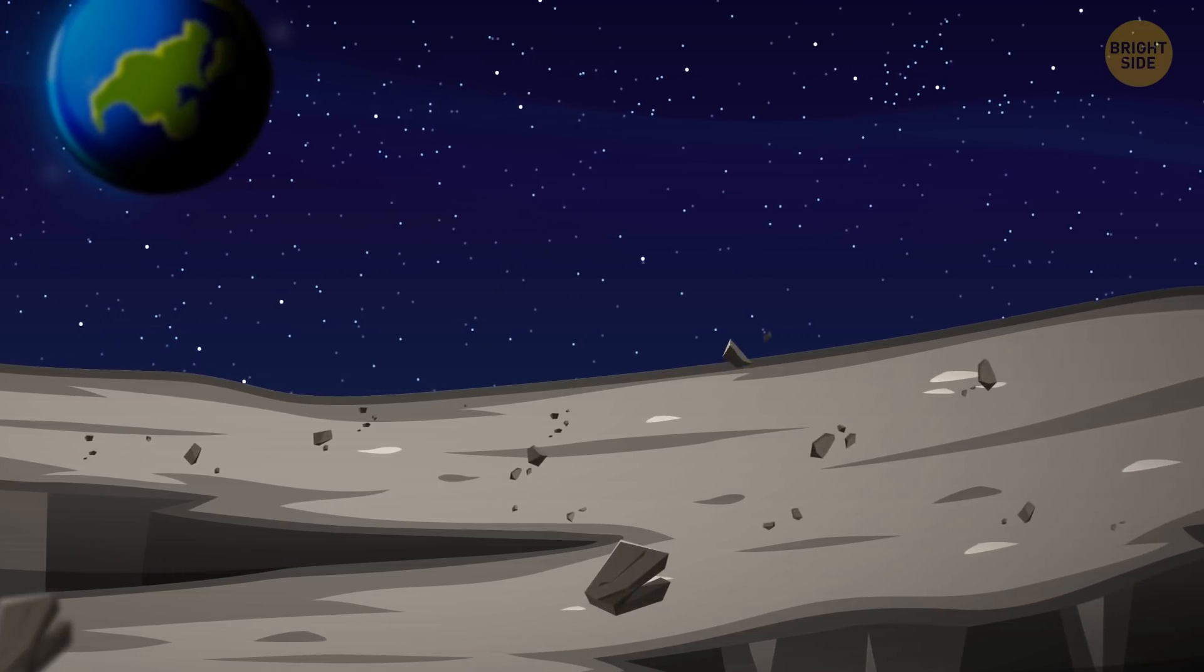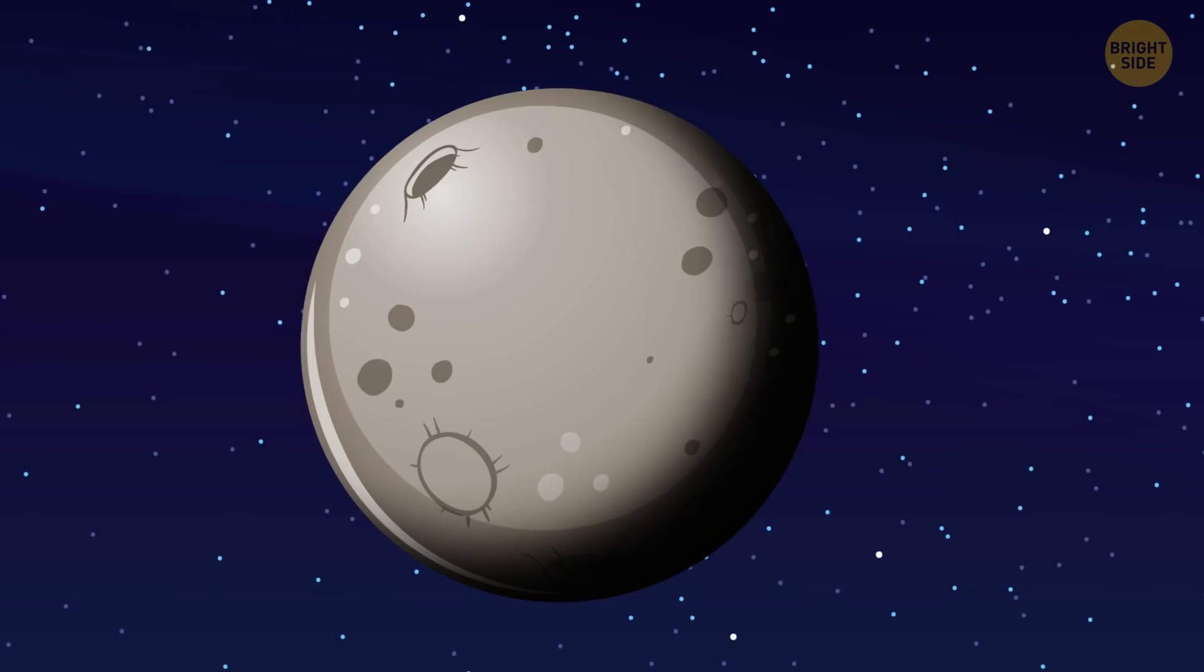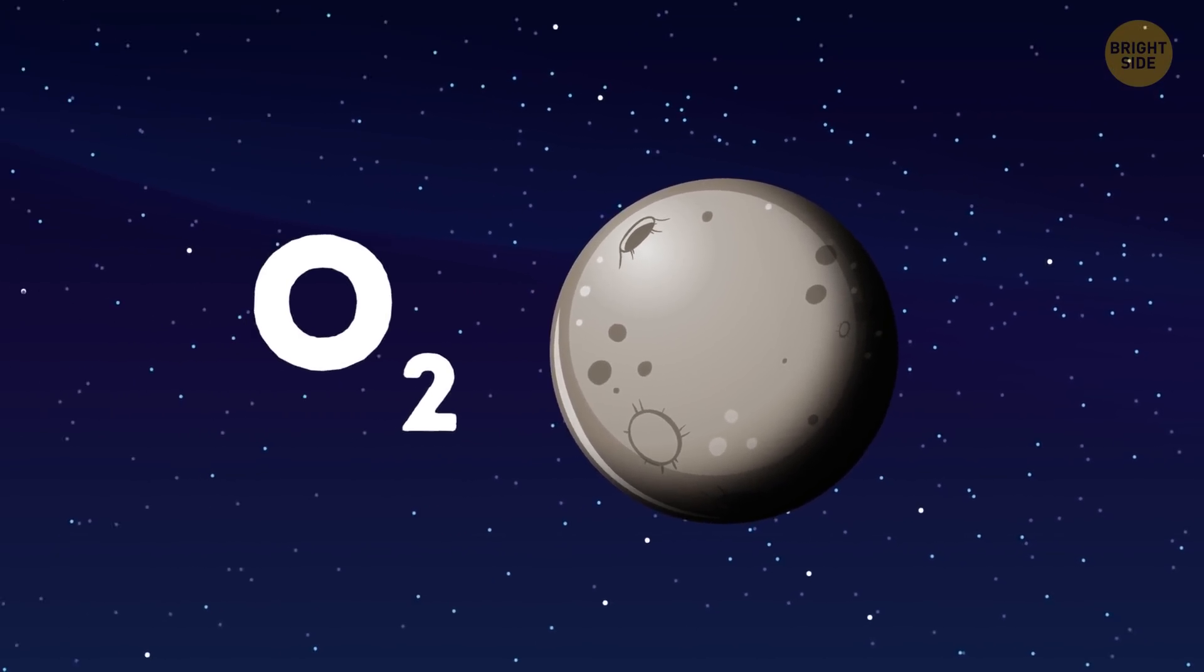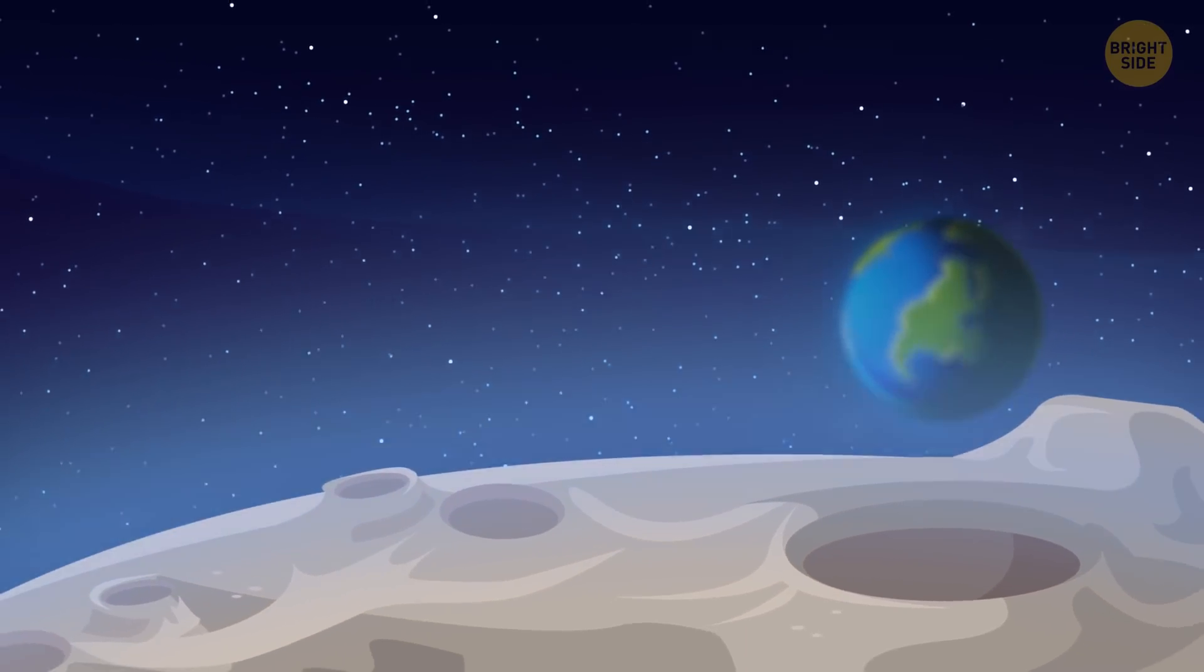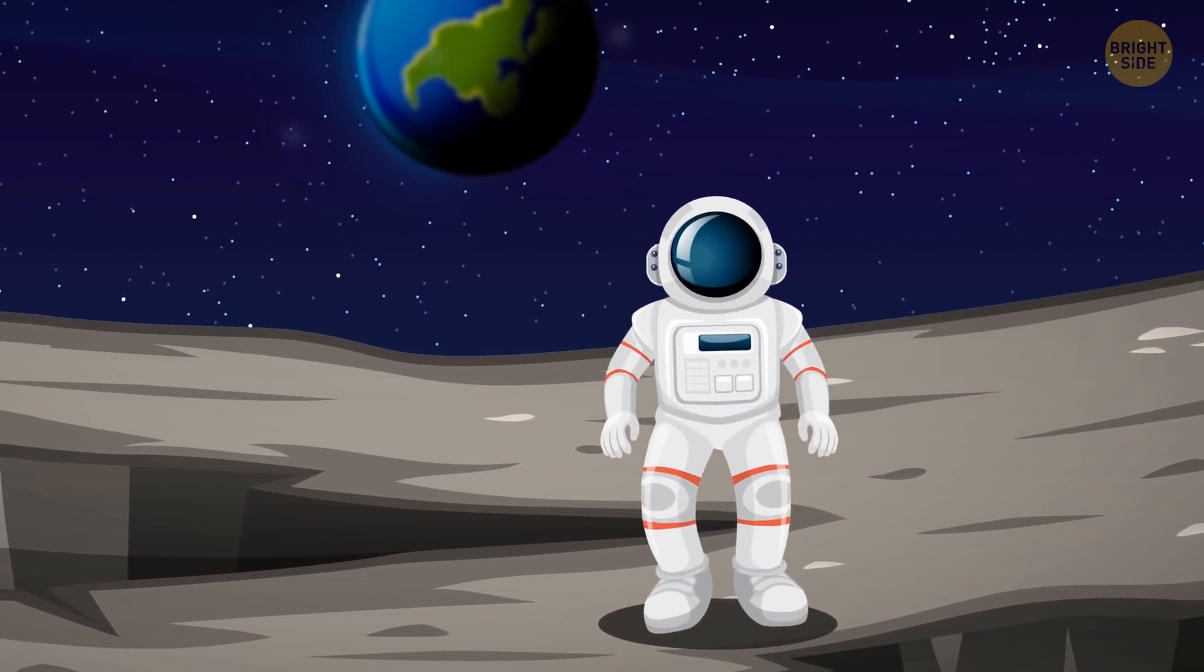Lunar soil has enough iron in it. And as we've already learned, there's some water too. The last piece of the puzzle is oxygen. Everyone knows there's no atmosphere on the Moon, and we can't breathe there. But oxygen is still present.